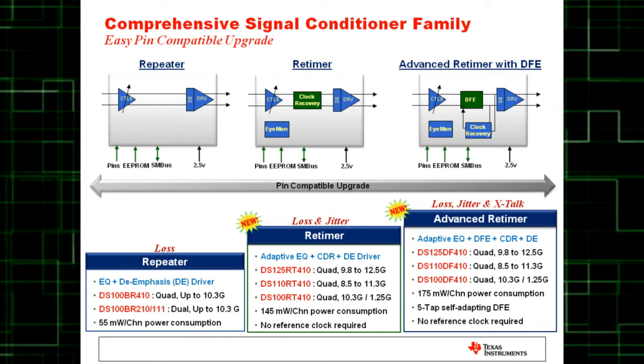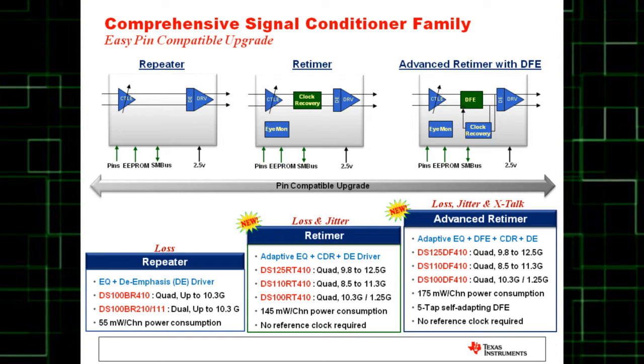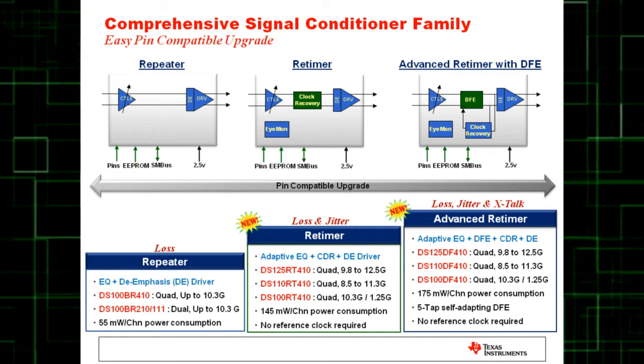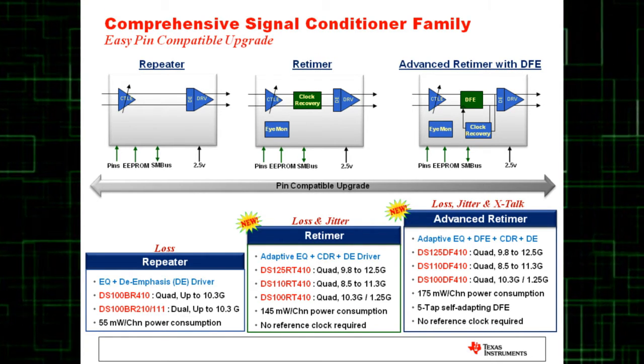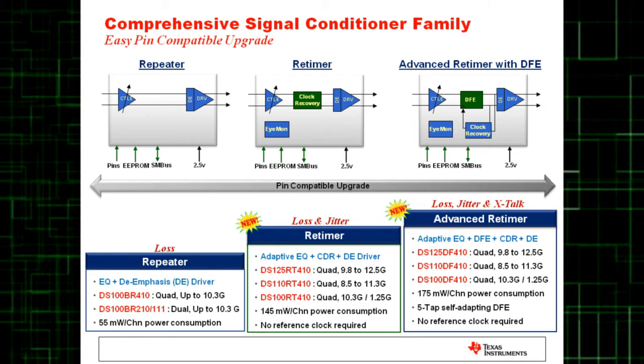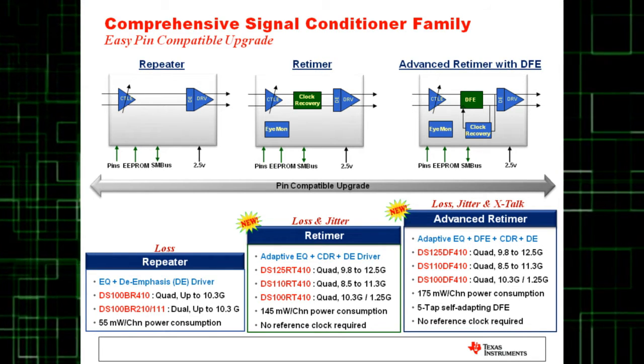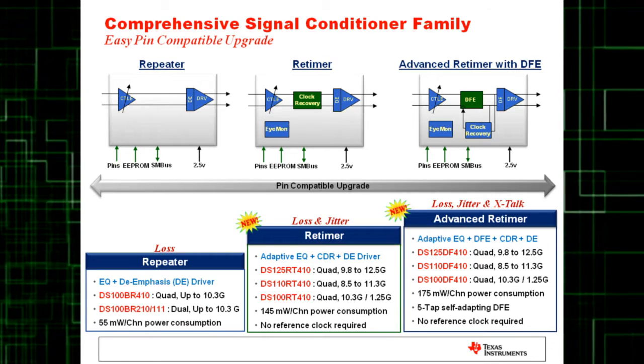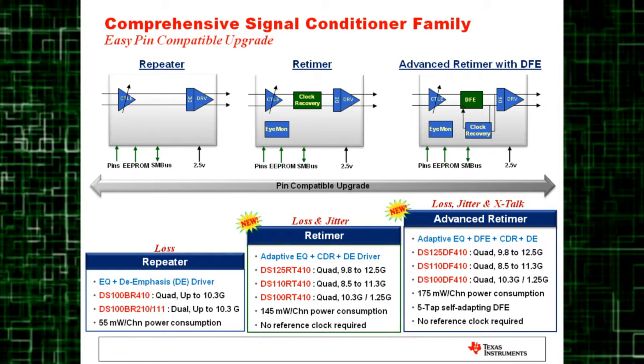Repeaters solve the problem of loss using an input equalizer and an output driver. The retimer adds a CDR, or clock and data recovery circuit.